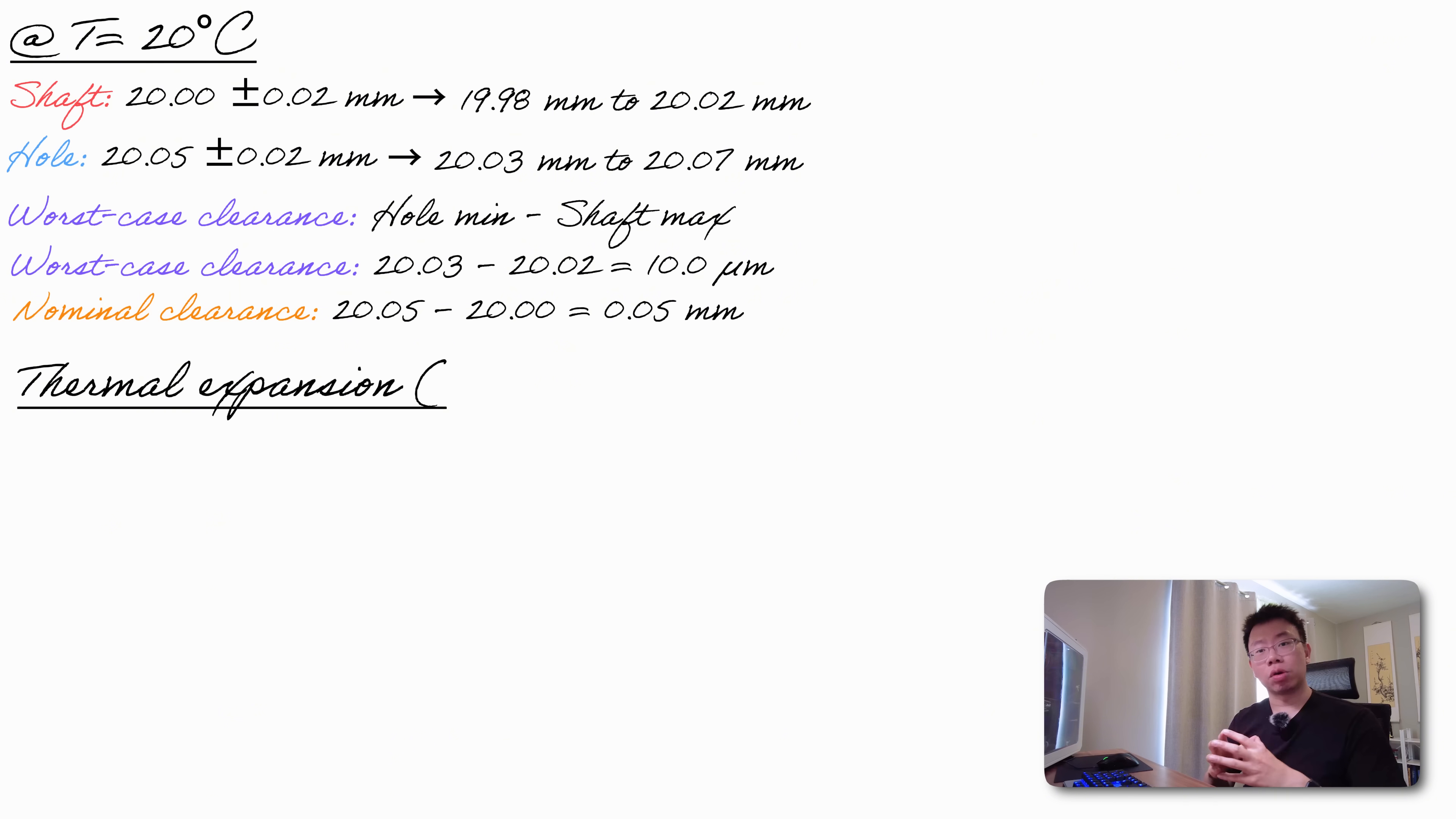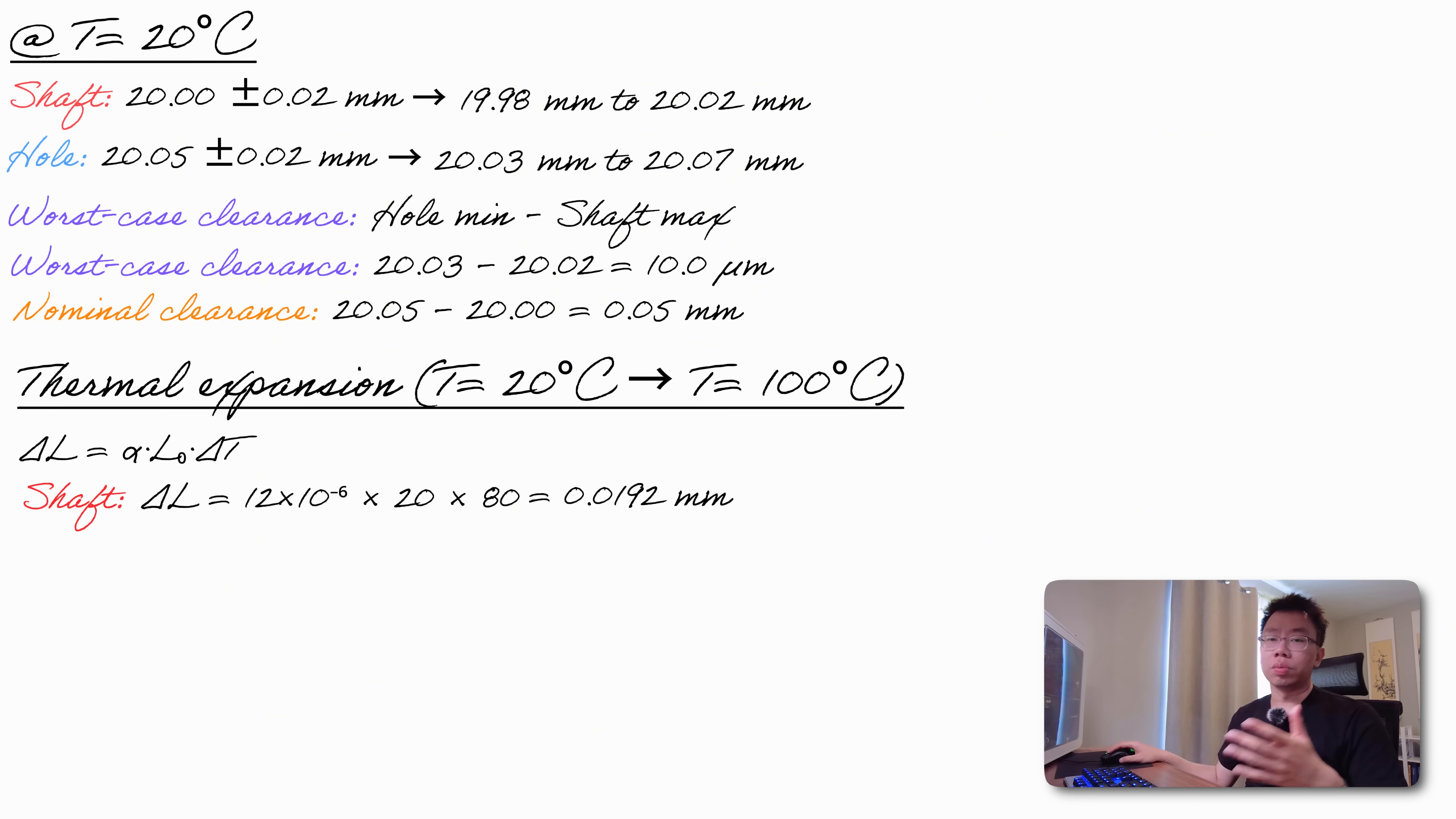Next, we have to account for thermal expansion from 20 to 100 degrees Celsius. The linear expansion formula is simply delta L equals alpha times L sub zero times delta T. For the steel shaft, alpha is 12 times 10 to the minus six per Kelvin, L sub zero is 20 millimeters, and delta T is 80 Kelvin. Multiplying, we get a shaft expansion of 19 thousandths of a millimeter. For the aluminum housing, alpha is 23 times 10 to the minus six, giving a hole expansion of thirty-seven thousandths of a millimeter.